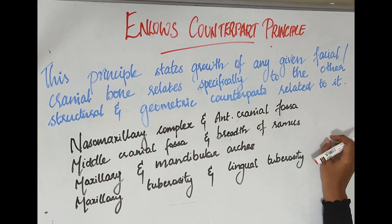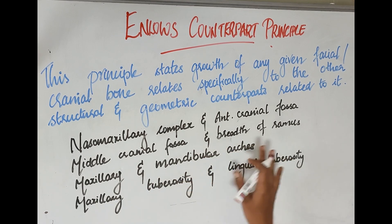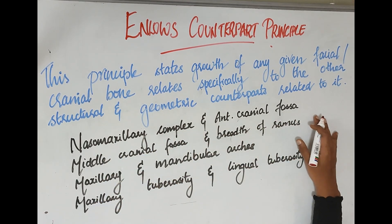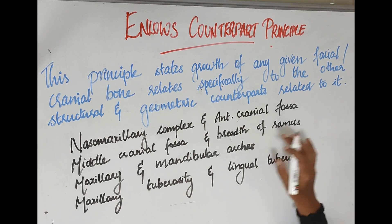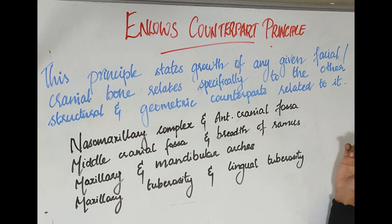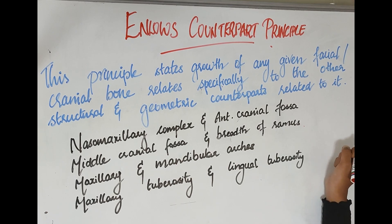However, this counterpart principle is not accepted. Examples of a bone and its counterpart include: the nasomaxillary complex and anterior cranial fossa; the middle cranial fossa and width of the piriform; the maxillary and mandibular arches; and the maxillary tuberosity and lingual tuberosity. This is all about Enlow's V principle and Enlow's counterpart principle.